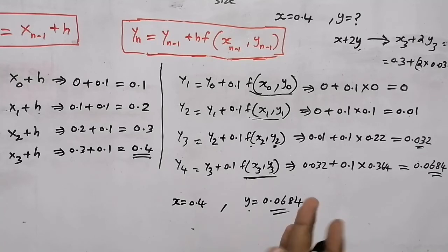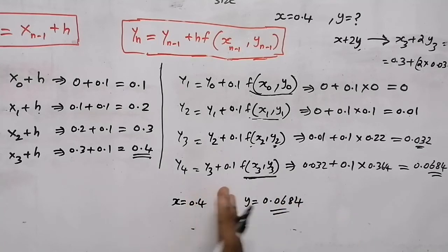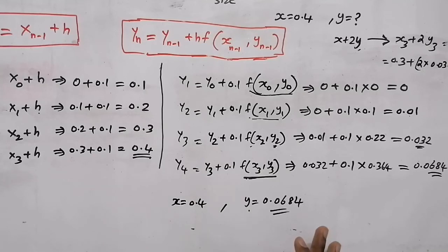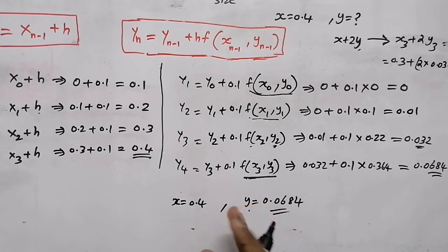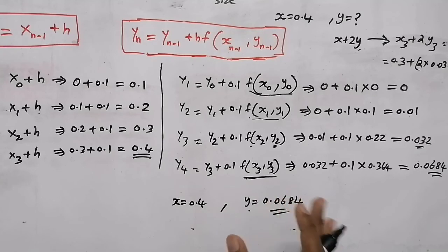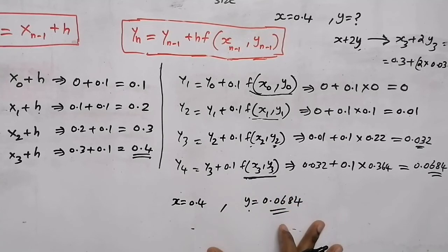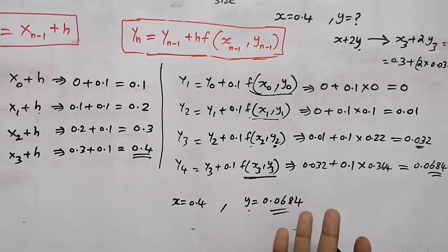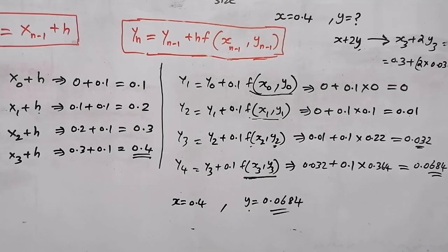This is the numerical method for the solution of a differential equation using Euler's method. When a question asks y(0.4), it means at x equal to 0.4, find the value of y — and we got 0.0684. If you like this video, please click the like button. Thank you.